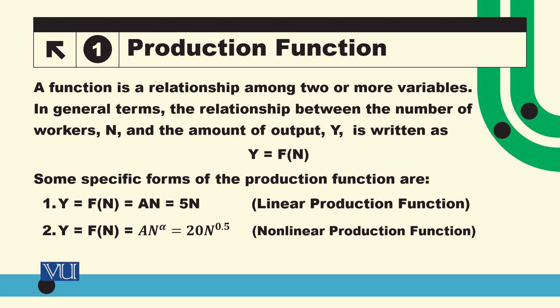Eek or example hum baat kerthay hain, non-linear production function ki. Yeh bhi bhaat basic sa non-linear production function hain. Y is equal to a n raise to power alpha. So again a is constant, alpha is some constant. Specifically hum baat ker rahe hain ke a is 20 and alpha is 0.5.